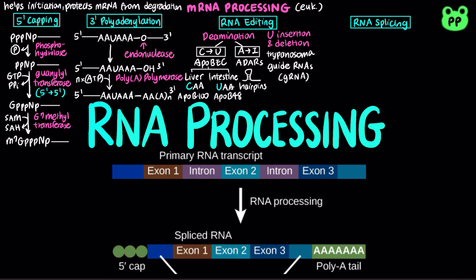In eukaryotic primary transcripts, non-coding DNA known as introns break up the coding segments called exons. RNA splicing removes introns from the primary transcript and joins the exons to form a continuous sequence that specifies a functional polypeptide. There are two types of splicing mechanisms.